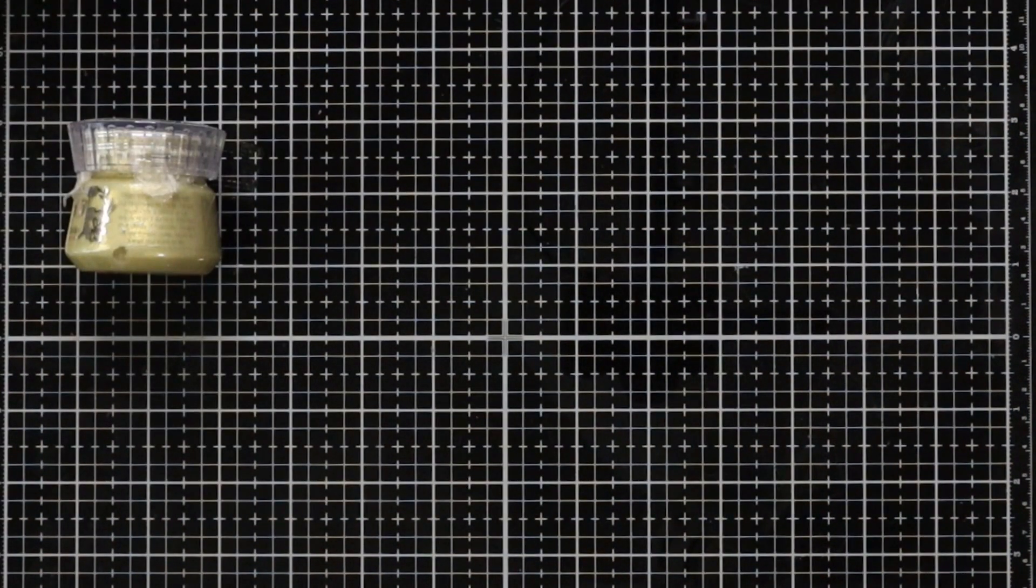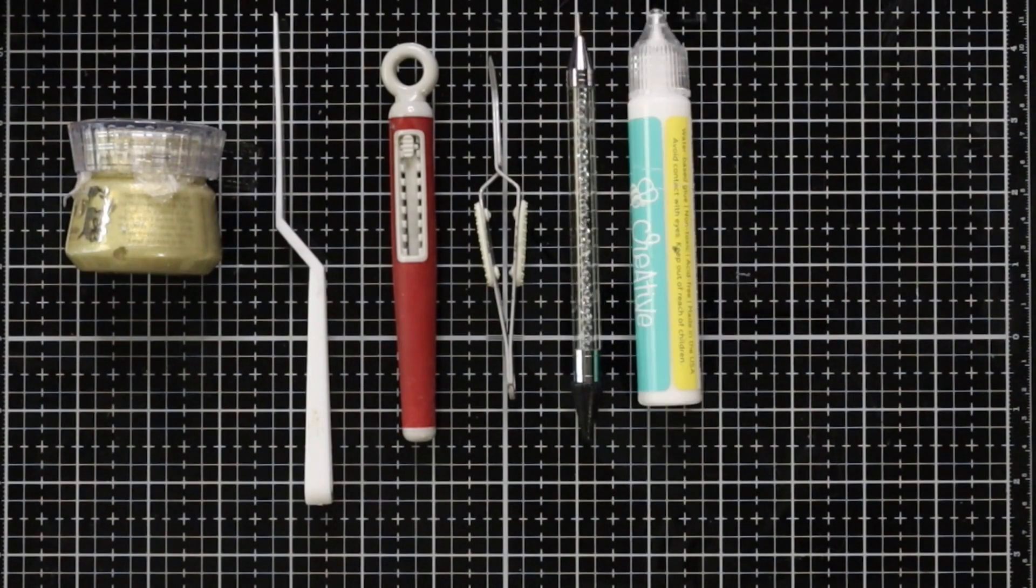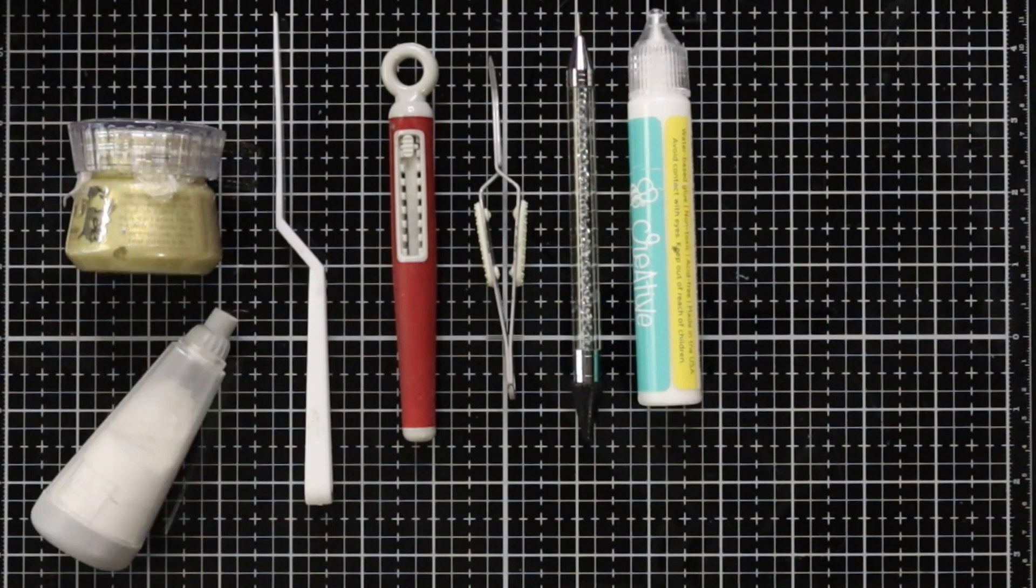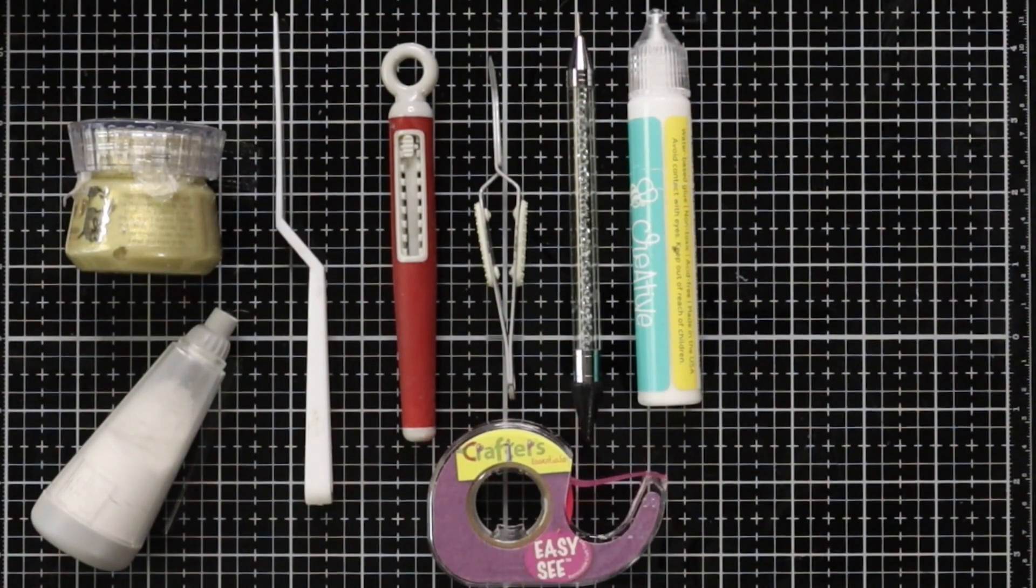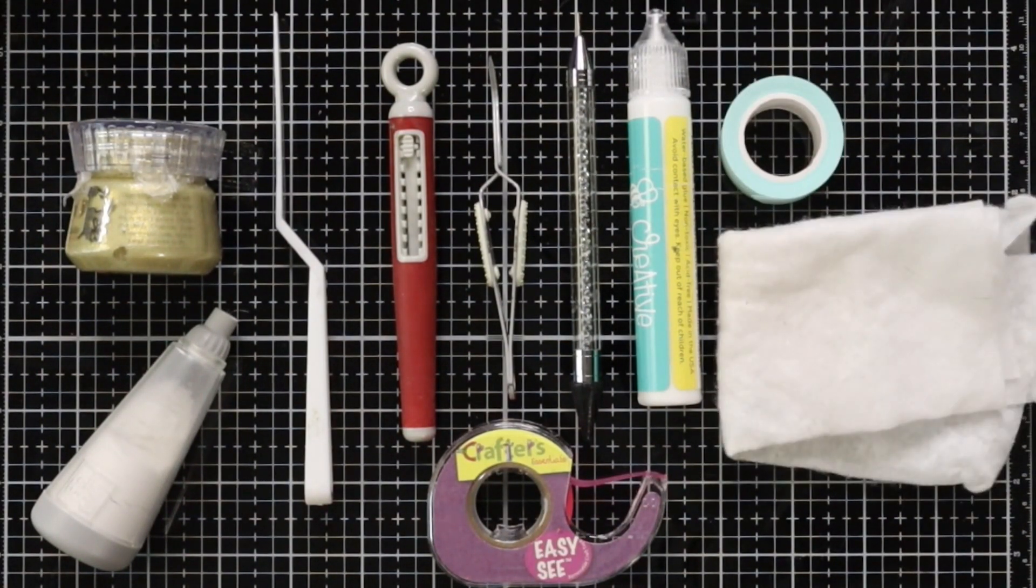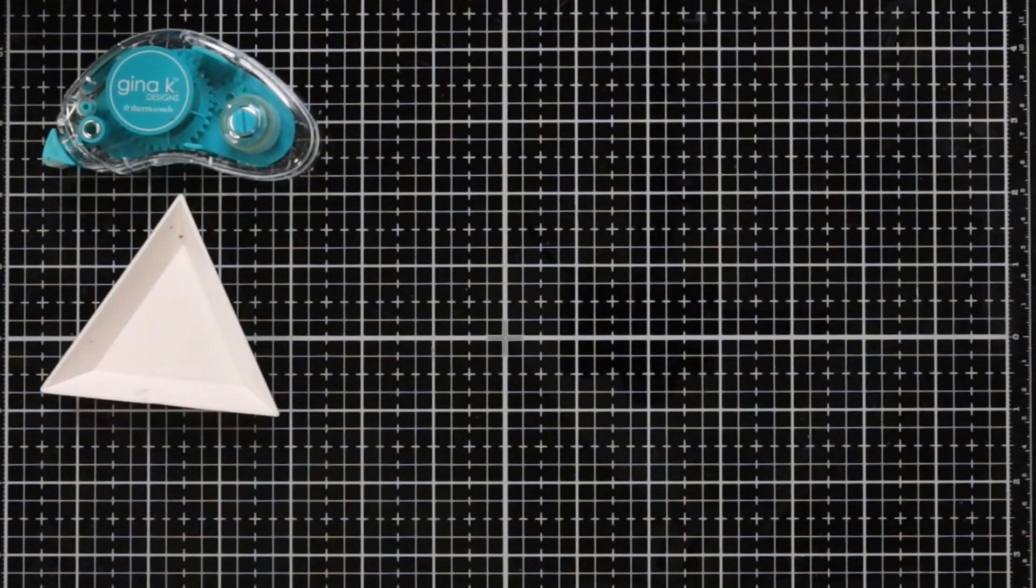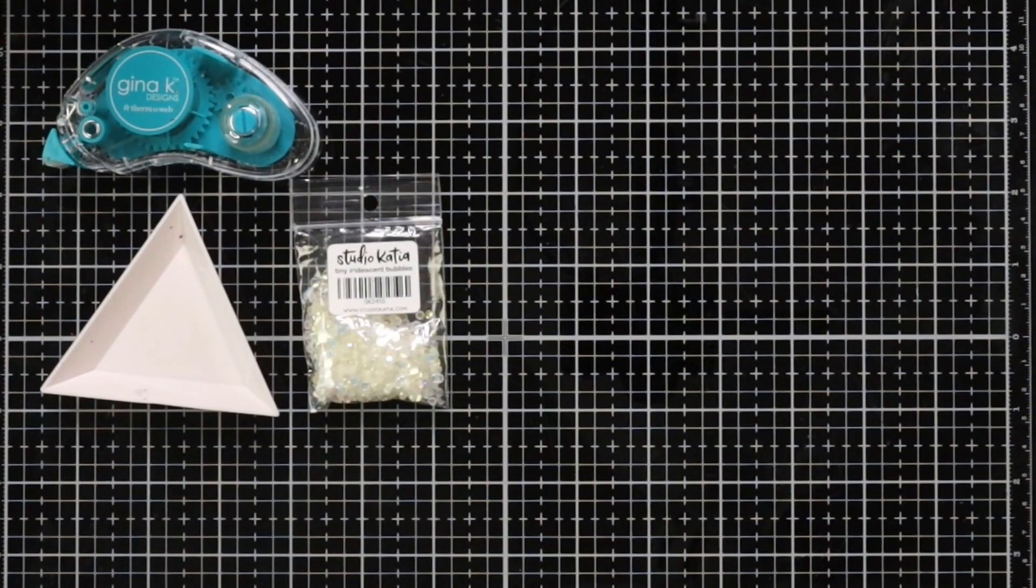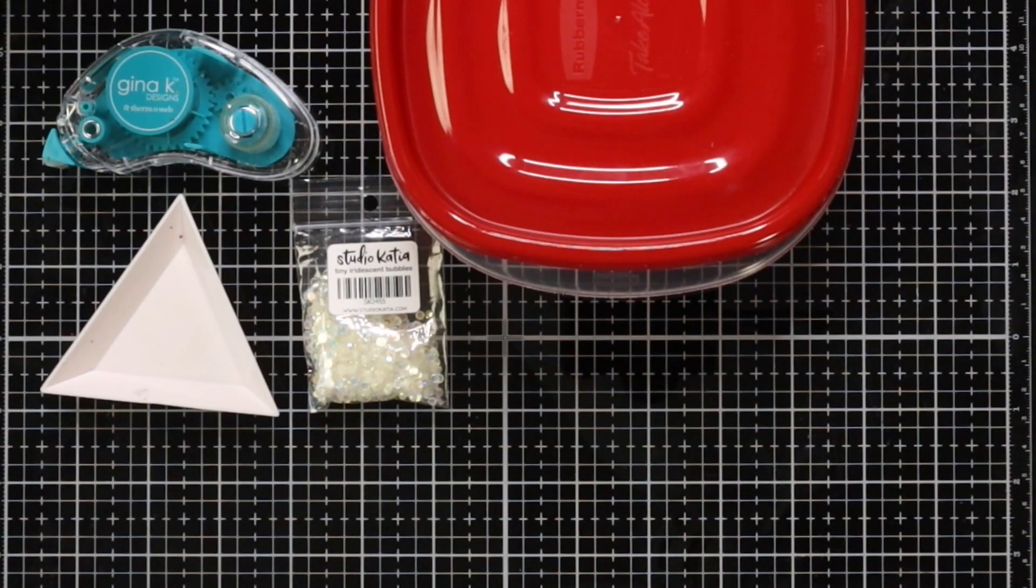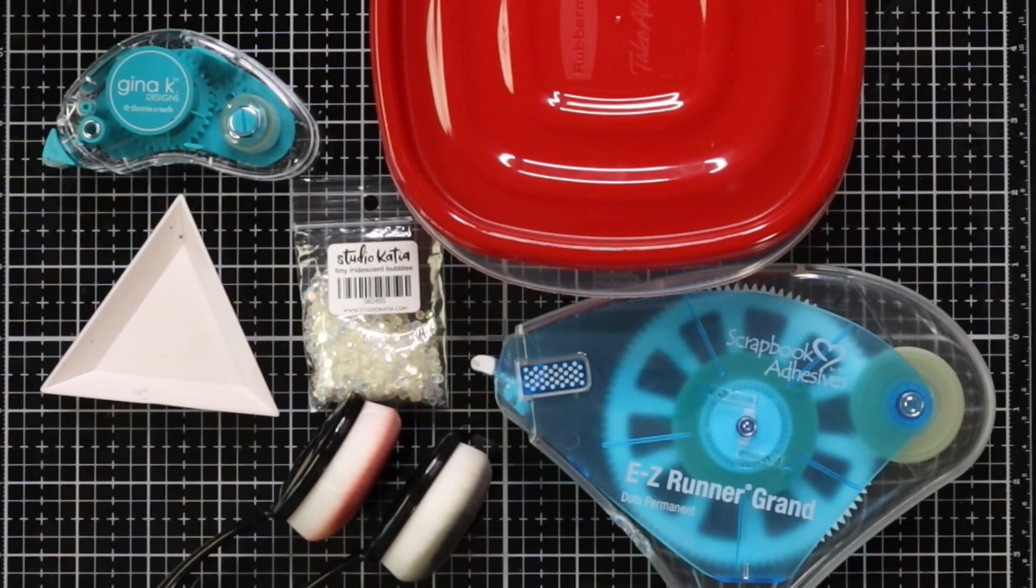Some additional supplies is the Nuvo Glacier Paste and this is in Golden Era, a palette knife, craft pick, tweezers, embellishment wand, liquid glue, anti-static powder, my EZC tape, and also some post-it tape. I'll be using a swiffer cloth and I have some Gina K Designs dot runner, an embellishment tray, some tiny iridescent bubbles, white embossing powder, I also have a large tape runner, and my blending brushes from Honey Bee Stamps.